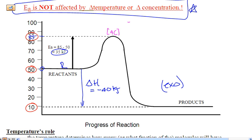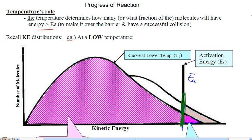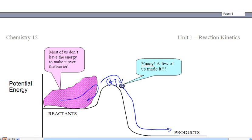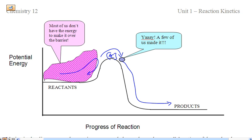What does temperature do then? We're going to jump back and look at those kinetic energy distribution curves from yesterday — I just cut and pasted them from yesterday's notes. All temperature does is increase the speed at which the reactants are moving. If they're moving faster, they're going to hit harder, and that helps them meet or exceed the EA barrier. At a low temperature, most of those reactants do not make it over the hill — they do not have enough kinetic energy to collide and break those bonds; only a few of them made it over.